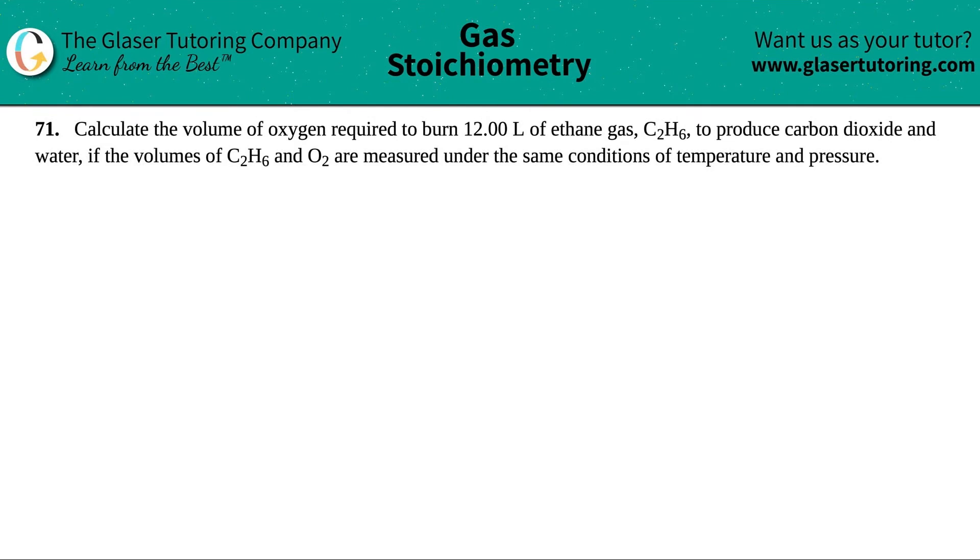Number 71. Calculate the volume of oxygen required to burn 12.00 liters of ethane gas, which is C2H6, to produce carbon dioxide and water if the volumes of C2H6 and O2 are measured under the same conditions of temperature and pressure.